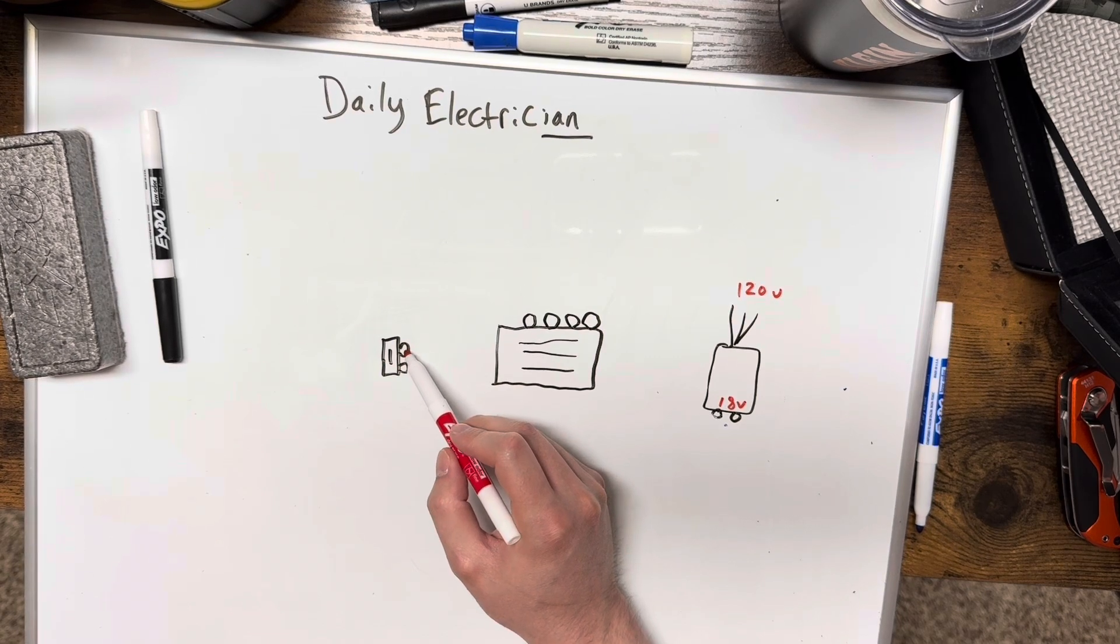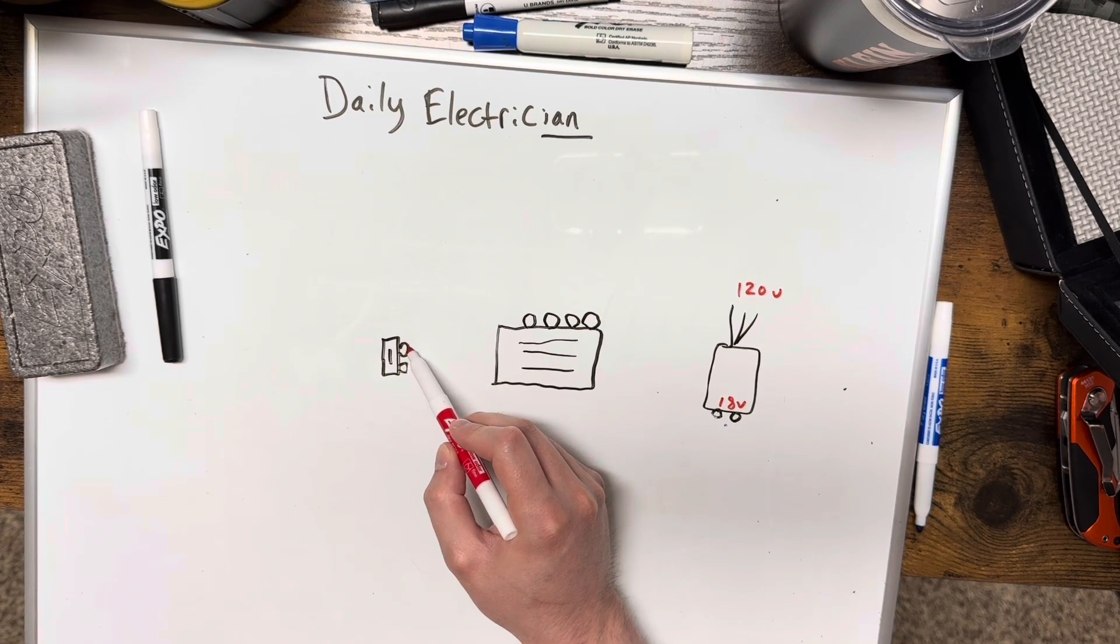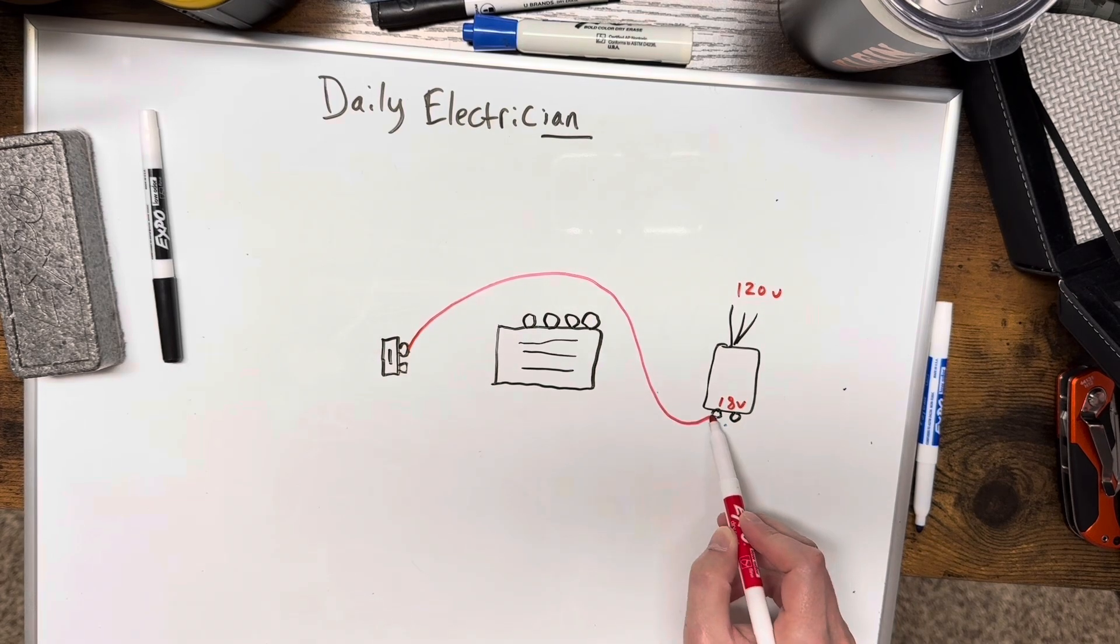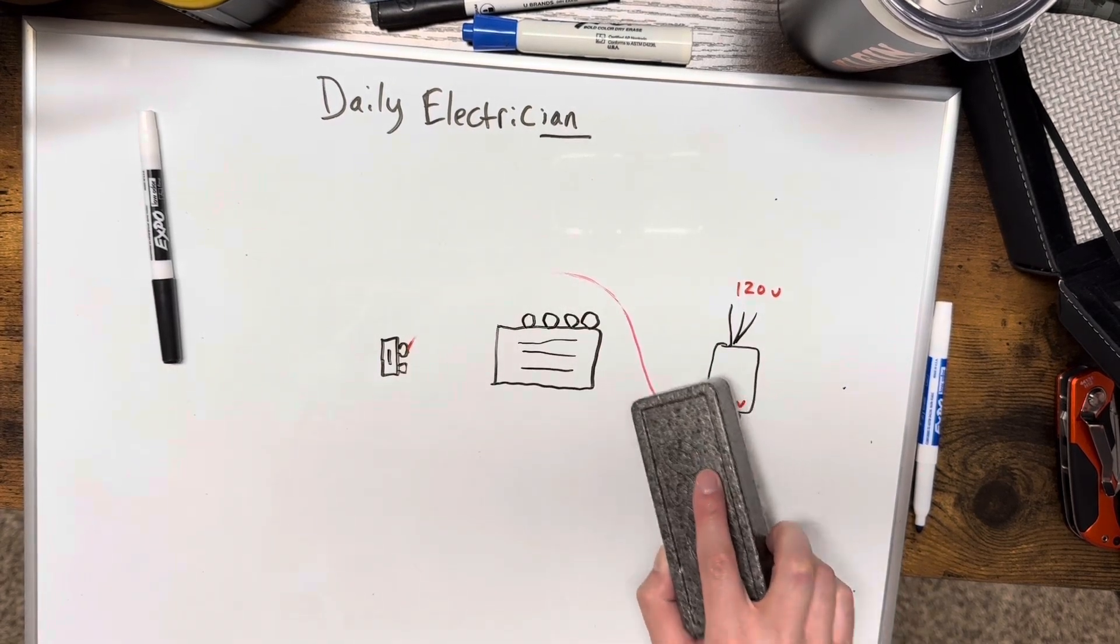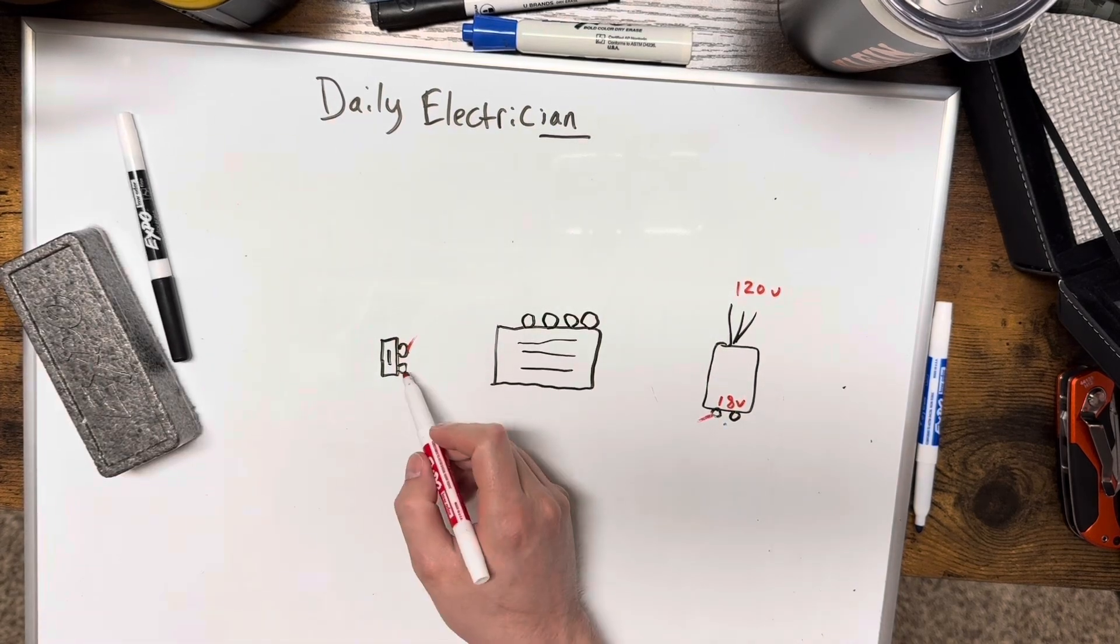First of all, to make this work, you're going to want to take one of the doorbell wires and it's going to go directly to the transformer.